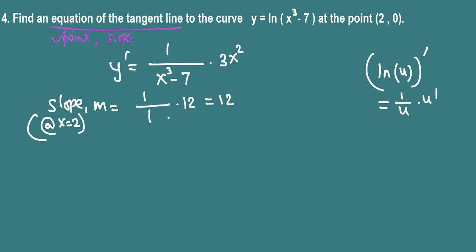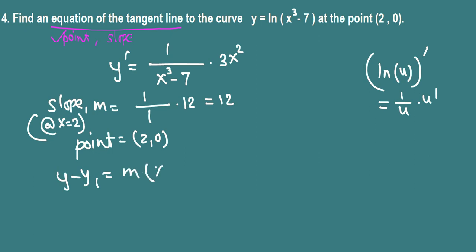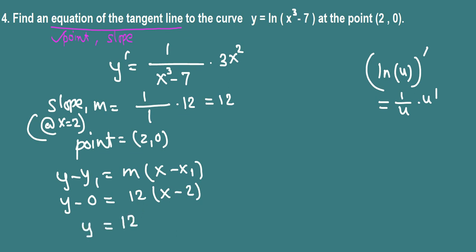The slope of the tangent line at this particular point is 12, and the point (2, 0) is already given. We can use y minus y1 equals slope times (x minus x1), where (x1, y1) is the given point and slope is 12. So y minus 0 equals 12 times (x minus 2). Simplifying: y equals 12x minus 24 as the final answer.